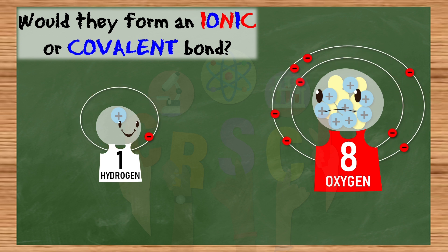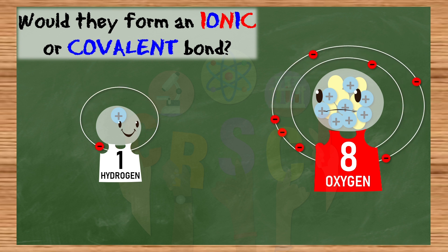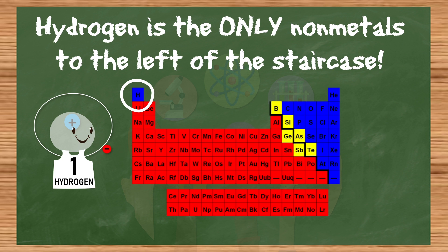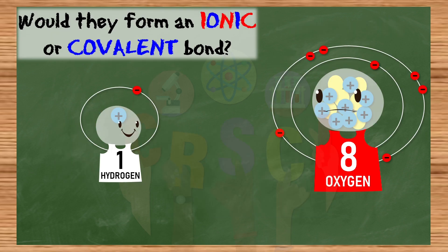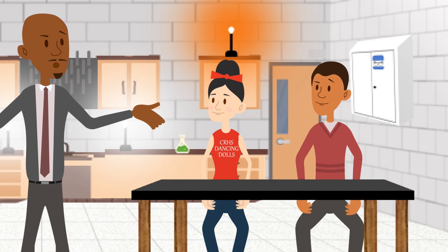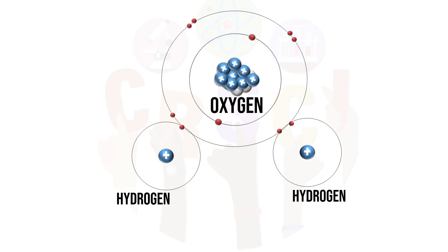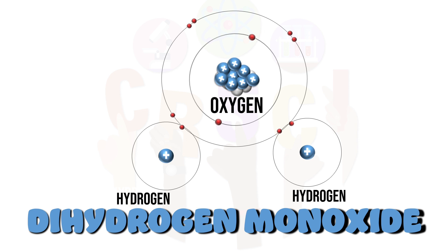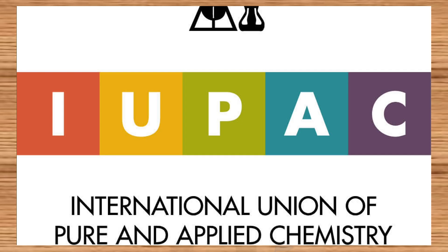Let's try this one: if hydrogen and oxygen were to combine, what type of bond would they form — ionic or covalent? Ionic, because hydrogen is a metal and oxygen is a non-metal? Hydrogen is a metal — since when? Hydrogen is the only non-metal on the left side; it was placed in group one because it only has one valence electron, just like all elements in group one. So these are two non-metals — they form a covalent bond. The name of this molecule is dihydrogen monoxide.